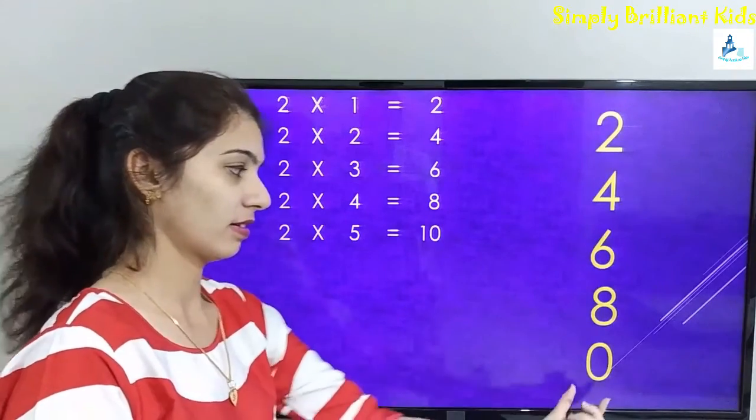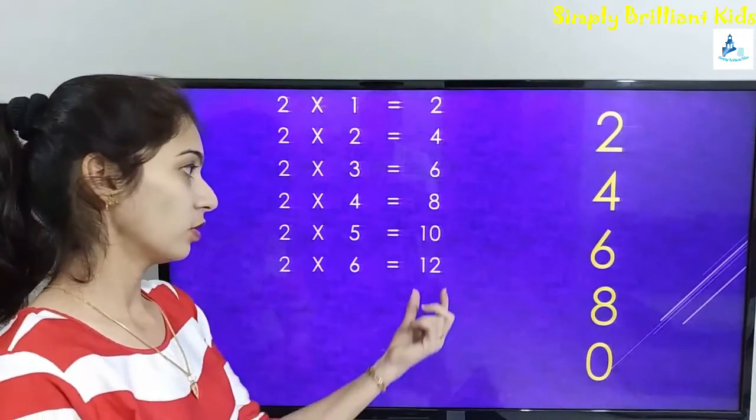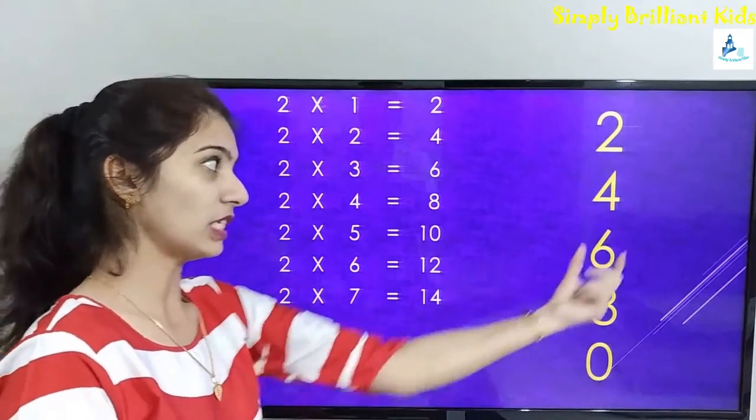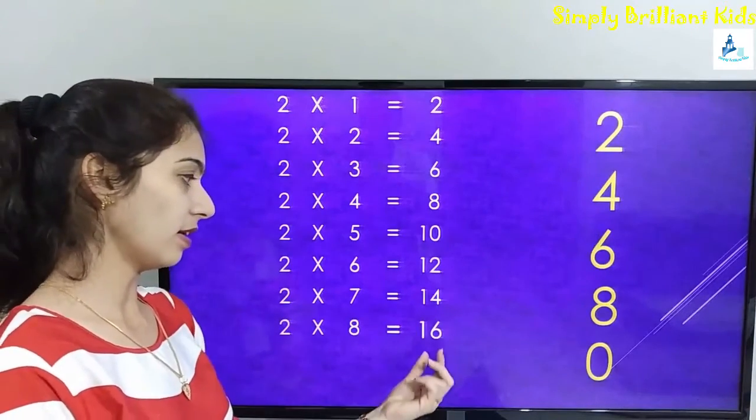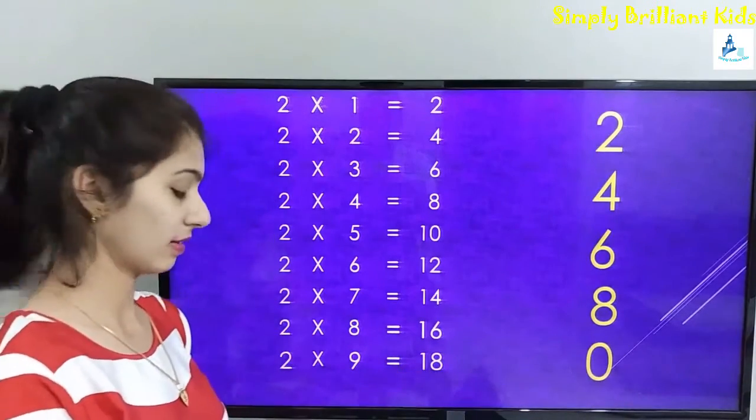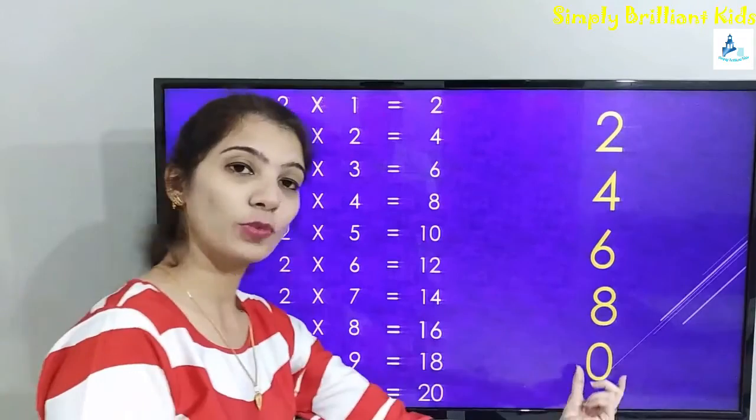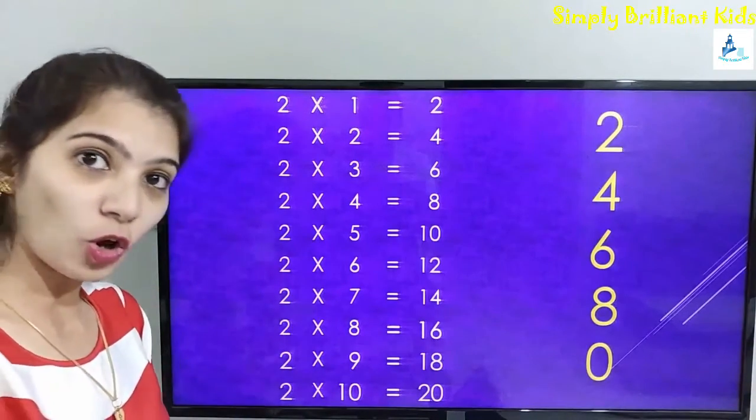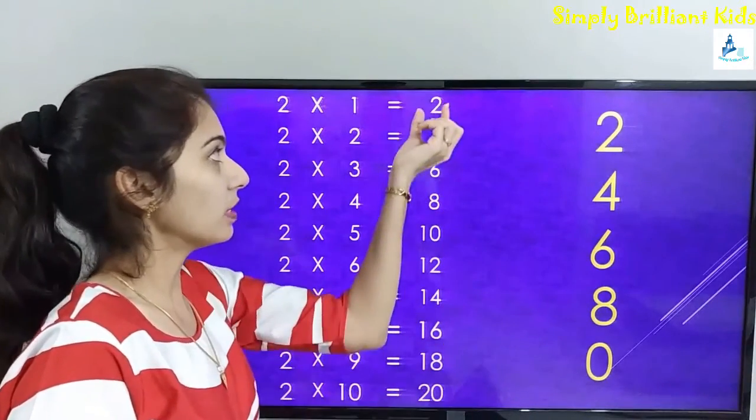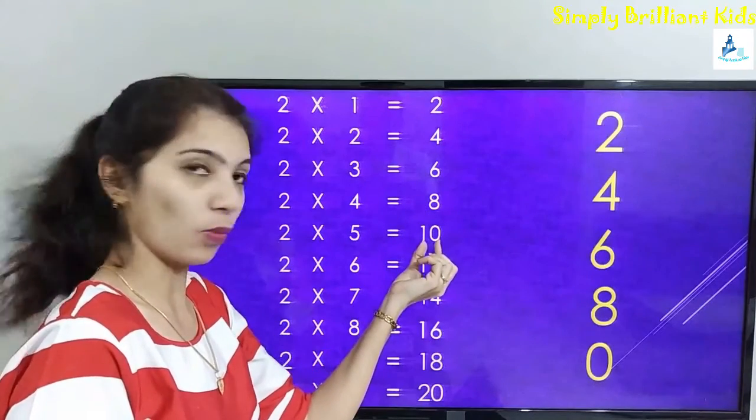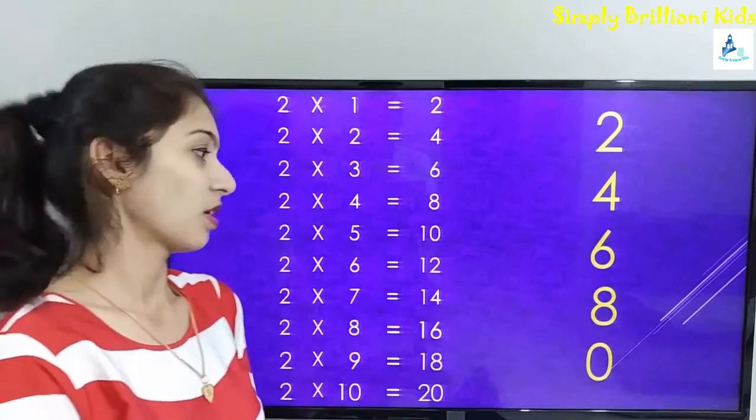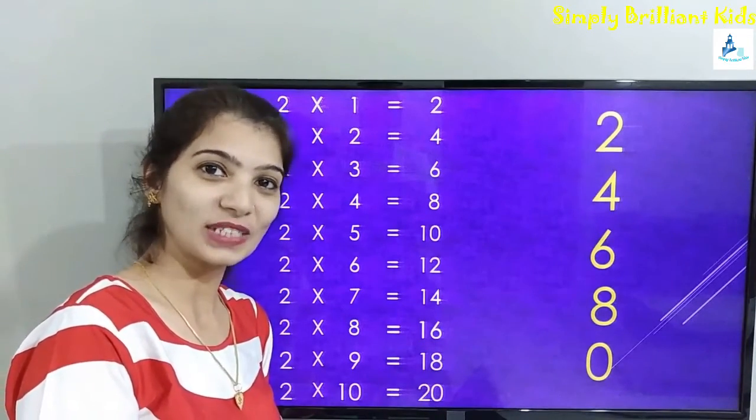Two sixes are twelve, two sevens are fourteen, two eights are sixteen, two nines are eighteen, two tens are twenty. Now just observe the series and the number in the ones place: the number is 2, 4, 6, 8, 0. Again the series will repeat: 2, 4, 6, 8, 0. So wasn't that easy to learn the two times table?